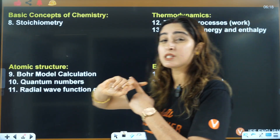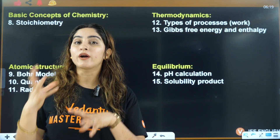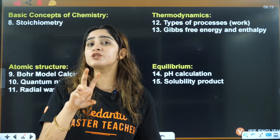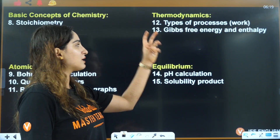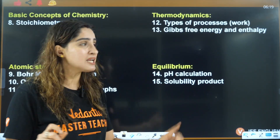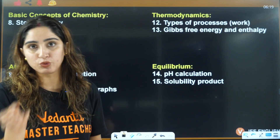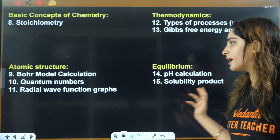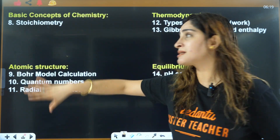KMnO4 and K2Cr2O7 are also trending topics — they ask you about preparation and properties. From thermodynamics, types of processes: work, and important processes like isothermal and adiabatic — the work in reversible and irreversible processes, directly the formula. Then the Gibbs-Helmholtz equation and the relation of ΔH and ΔU, which is also a very famous question.